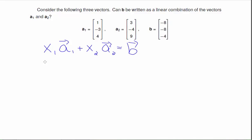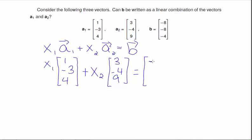So doing a substitution, we have x1 times [1, -3, 4] plus x2 [3, -4, 9] should be equal to [-8, -8, -4].